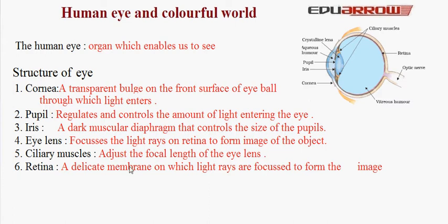6. Retina. It is a delicate membrane on which light rays are focused to form the image. This retina consists of a large number of light-sensitive cells. When light falls on them, they get activated and generate electrical signals. These electrical signals are sent to the brain through optic nerves. The brain interprets these signals and we see the objects as they are.